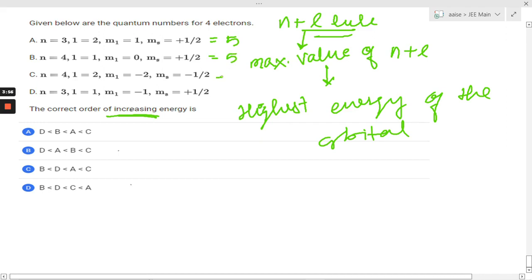From here we can see the N plus L for this is 5, for this it is also 5, for this it is 6, and for this it is 4. Here we are getting the same N plus L value. So if we have the same N plus L value, then we consider the value of N. Greater the value of N, greater will be the energy, meaning we have more energy.